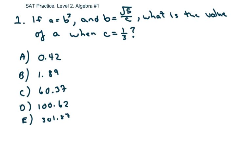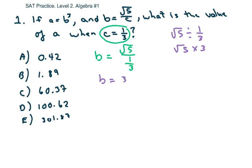So basically, in a question like this, it's basically a matter of just plugging in your C here, and then solving. So we have B equals square root of 5 over one-third. And recall, this is like saying square root of 5 divided by one-third, which is the same as square root of 5 times 3. So this is B is really 3 square root of 5.